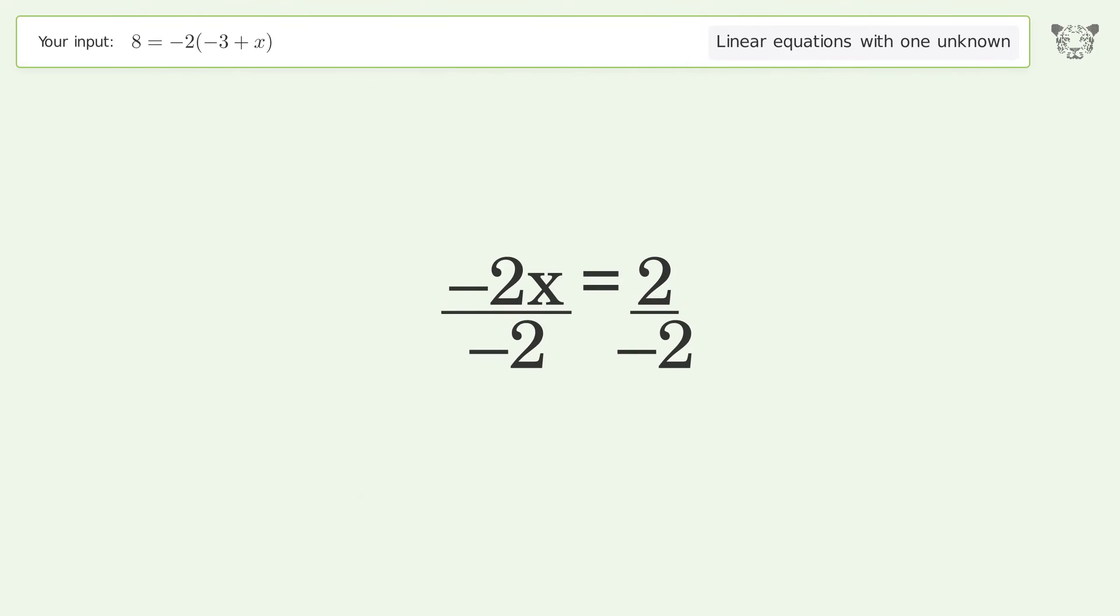Isolate the x. Divide both sides by negative 2. Cancel out the negatives.